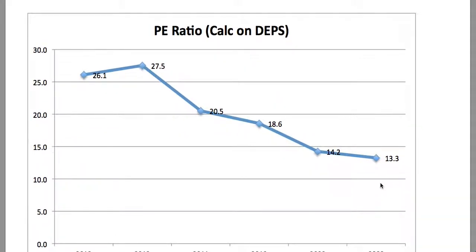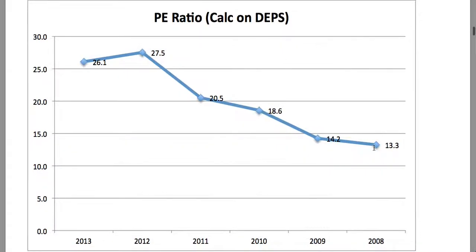Considering the price-to-earnings ratio of the company, we see that in 2008 it was 13.3 times earnings. Notice this drop from 27.5 to 26.1, which is the first time that the PE multiple started to contract since around about 2008. So if you are long in this share at this point I would recommend exercising caution. This video is of course educational, but someone considering this drop in the PE ratio with the reduced growth rate in the earnings per share would be prudent to take note.